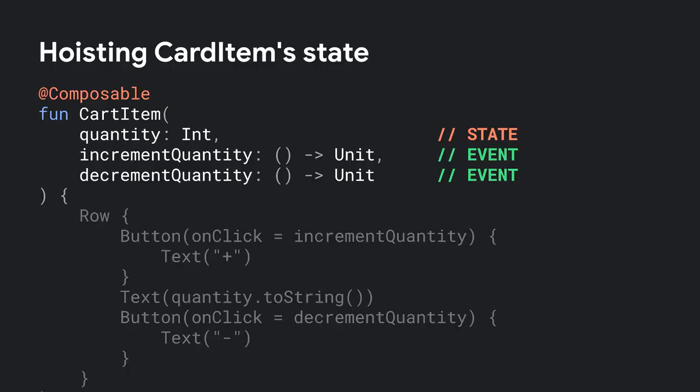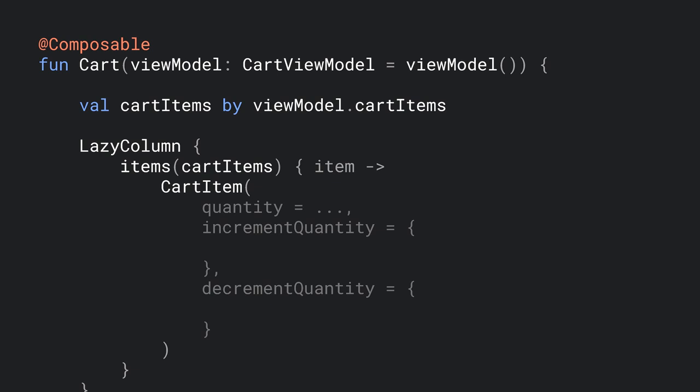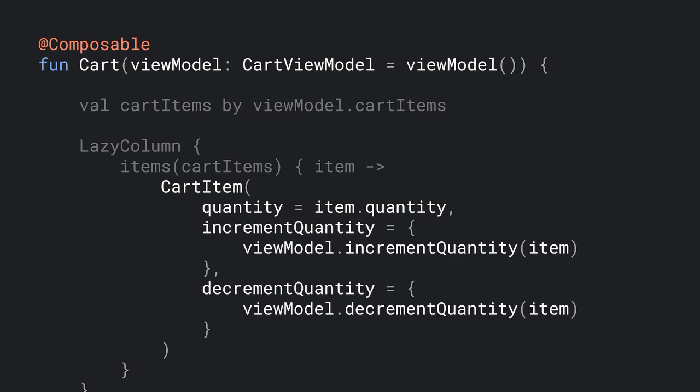Here we have the stateless version of CartItem, receiving the quantity as state and exposing user interactions as events. Cart, which displays the different CartItems in a lazy column, is responsible for calling CartItem with the right information. The actual items on the cart is application data retrieved from CartViewModel. For each CartItem, we pass in each particular quantity, and the logic to increment or decrement quantities is delegated to the ViewModel as the owner of CartData.